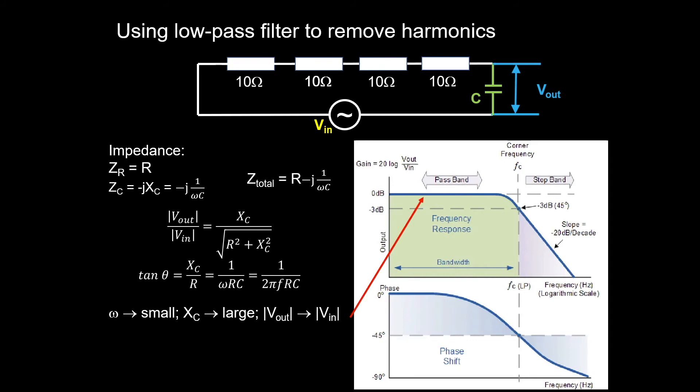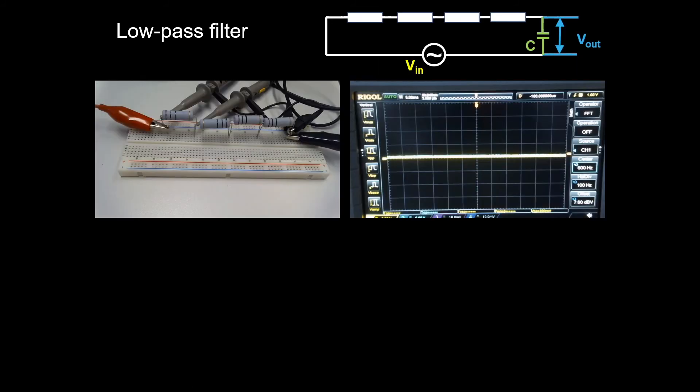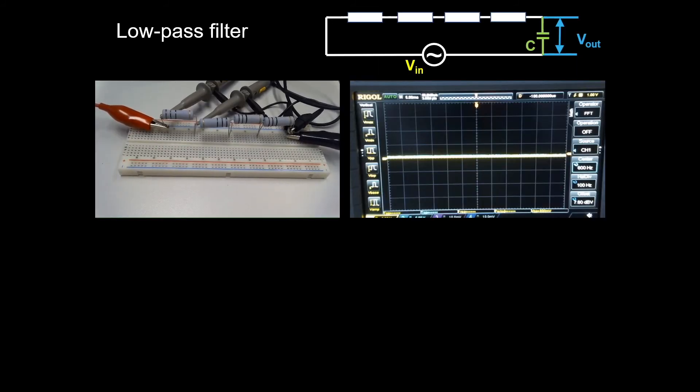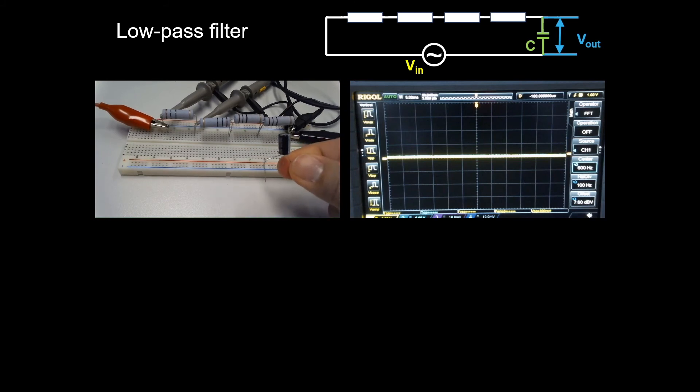When the frequency is small, the reactance of the capacitor is large, that means the output voltage goes close to the input voltage. When the frequency is large, the reactance is small, so the output voltage is close to zero. What it means is that the low-pass filter will only allow low frequency to go through and cut off the high frequency signals to remove the harmonics. Now we're going to create a low-pass filter with a 100 microfarad capacitor.